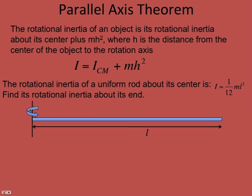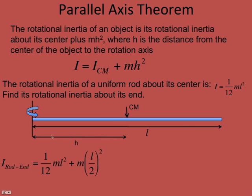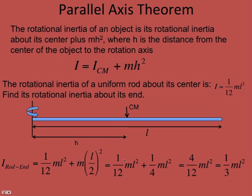What about a rod rotating about its end? If we know its rotational inertia about the center and we know the parallel axis theorem, we can solve for that. If it's rotating about its end, h is the distance from the rotation axis to the center, so h equals L/2. A rod about its end equals its value about the center plus the correction term (L/2)². Getting a common denominator — multiplying by 3/3 — we get 3/12 plus 1/12, which is 4/12, or one-third mL².